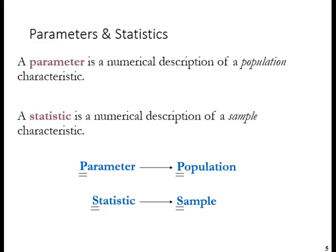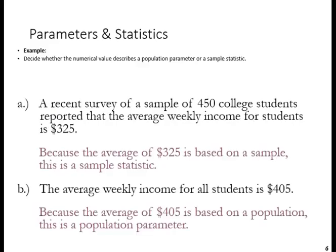We will be exploring when it is appropriate to make such inferences. Usually we can tell — perhaps we're reading a research report — from the way a sentence is worded whether or not the discussion pertains to a sample or a population. For example, the first statement says a sample of 450 college students reported weekly income of $325 — the word 'sample' is actually used, so that's fairly obvious. In the second statement, the average weekly income for all students is $425 — the word 'all' is the operative word, meaning we're talking about an entire population.